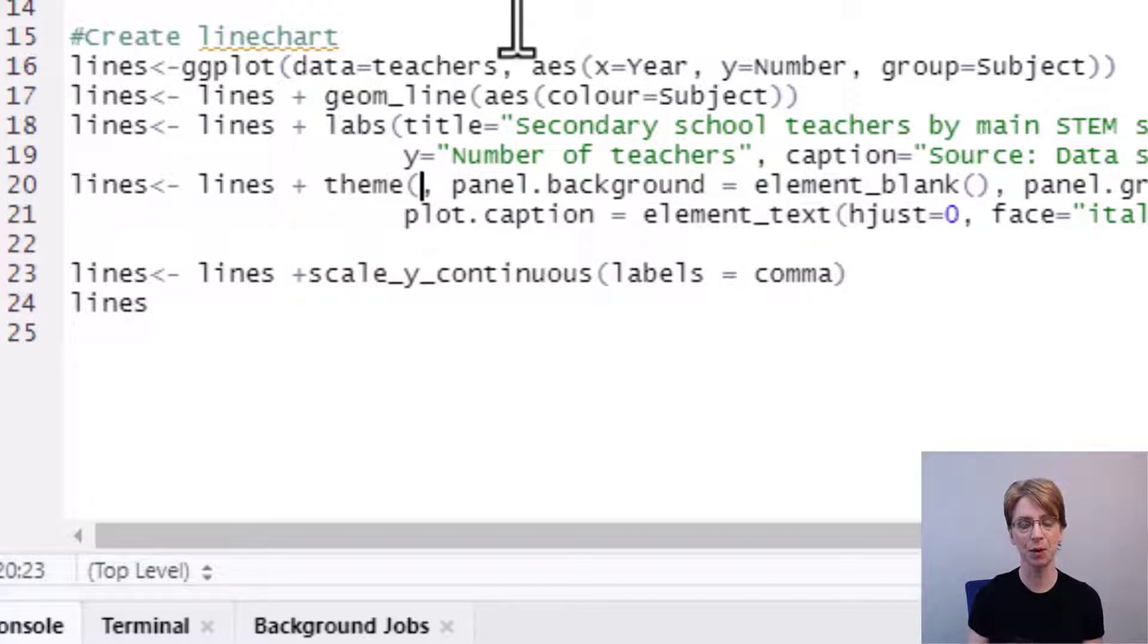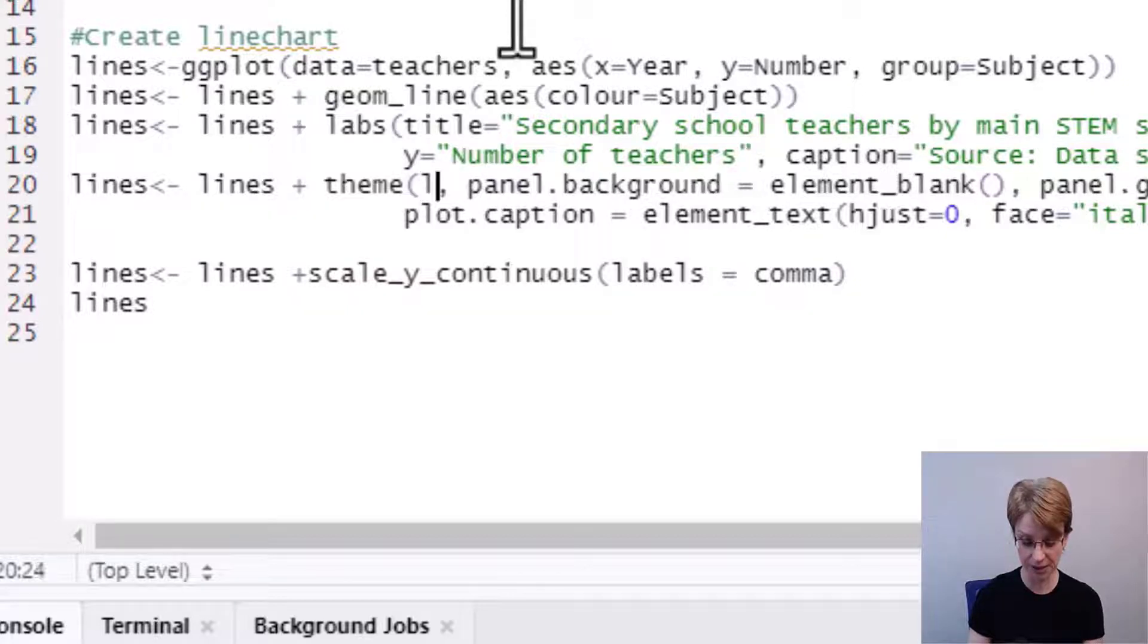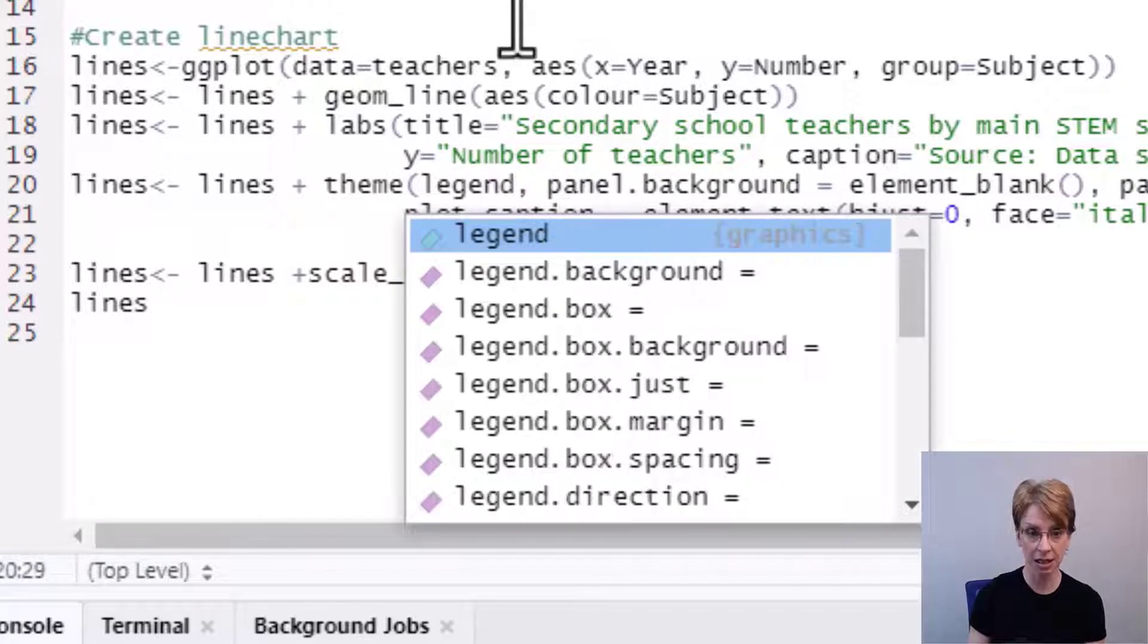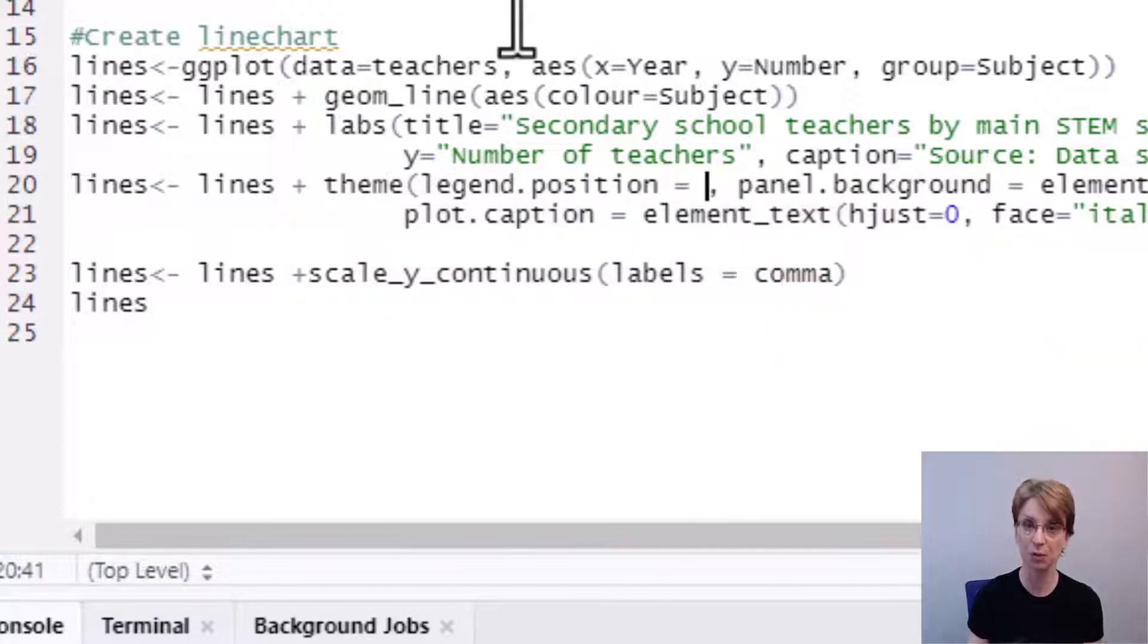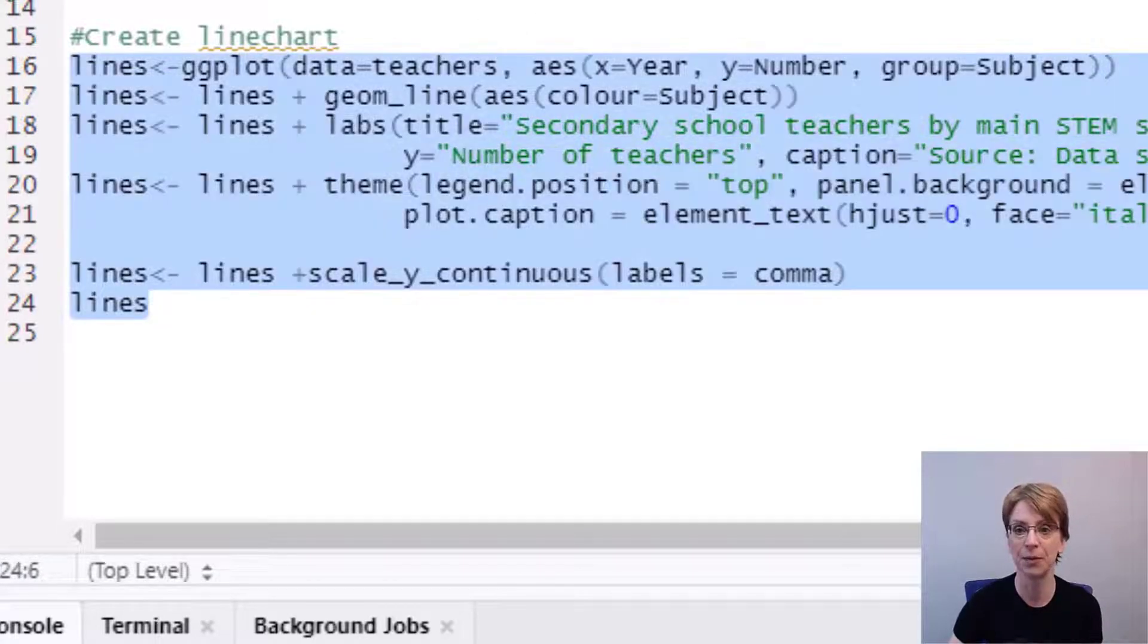And this time what I'd like to do inside theme is change the location of the legend I would like the legend to sit at the top of the diagram and to do that all I do is type in legend.position so we're back using the same code as we used earlier to remove the legend but instead of removing it this time we're going to say inside double quote marks top and that will move the legend up to the top if I run my code.